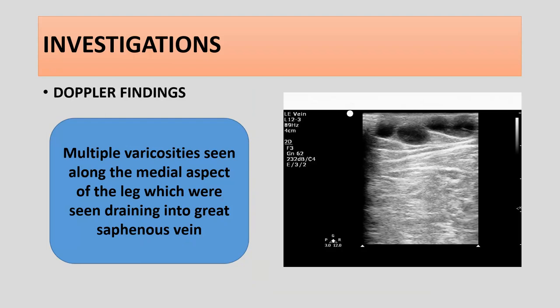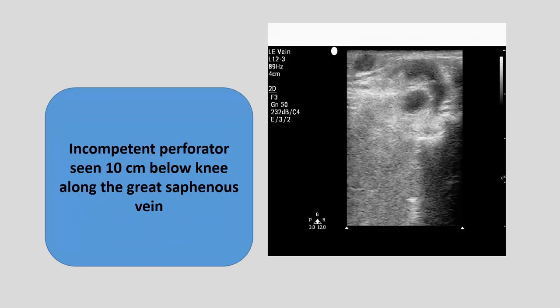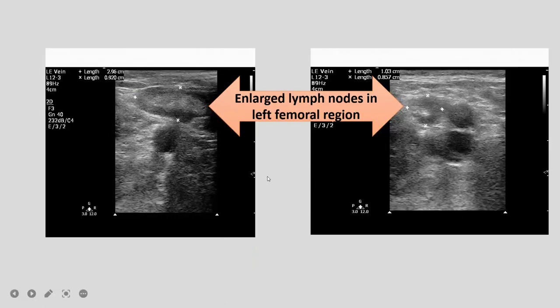The patient was then subjected to radiological investigations. The first investigation was ultrasound Doppler, in which there were multiple varicosities seen along the medial aspect of the leg which were seen draining into the great saphenous vein. There were incompetent perforators seen 10 cm below the knee along the great saphenous vein on the left side. There were also enlarged lymph nodes in the left femoral region.